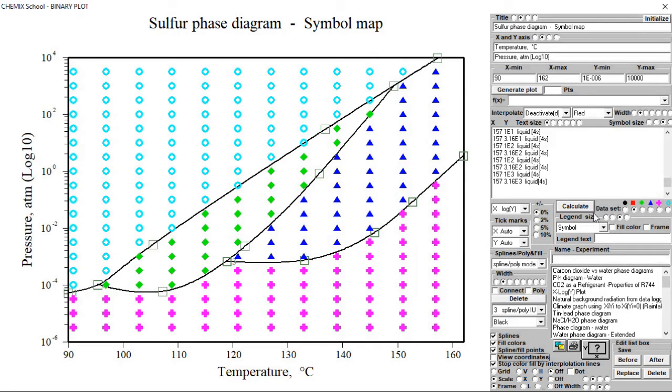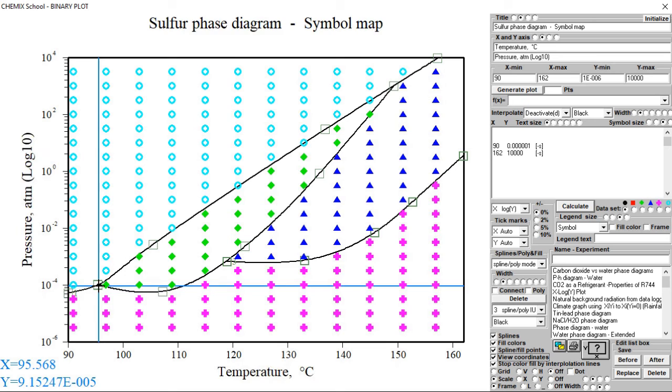We now want to show the start of the monoclinic phase using a red filled circle. Select data set 1. Check the view coordinates check box. Find the start position of the monoclinic phase, represented by green diamonds, and take a note of the position. Insert the coordinates and the commands for the red symbol color and a big symbol. Click the calculate button to display the changes.